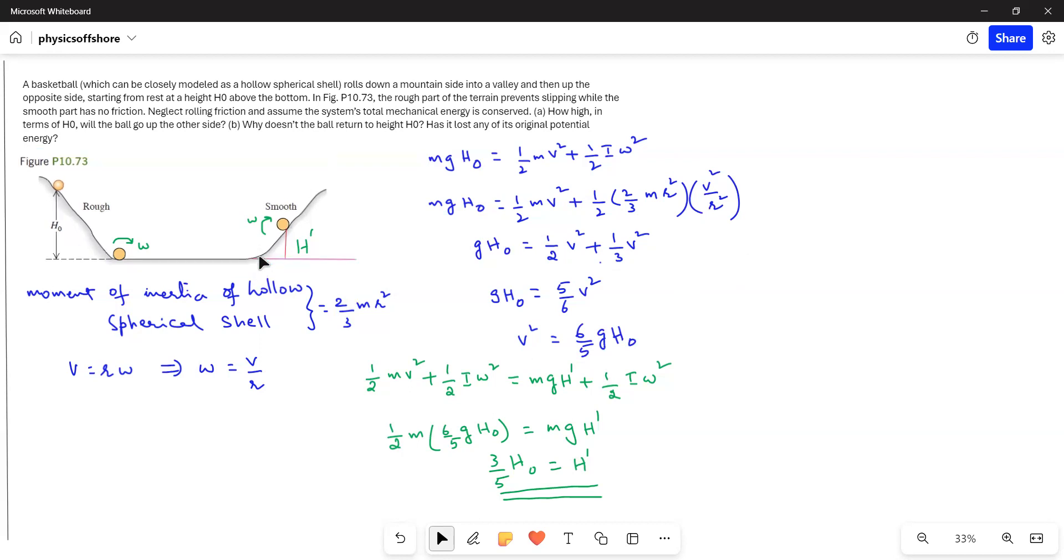Now the ball is going on the smooth surface. It is climbing up. While climbing up, the initial kinetic energy, translational kinetic energy and rotational kinetic energy - here it has both translational kinetic energy and rotational kinetic energy.